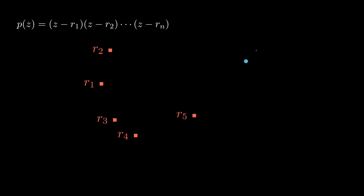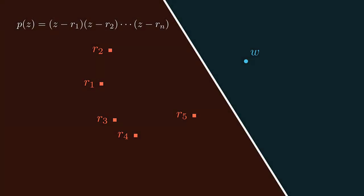Now pick some point w, and w is outside of the roots of p. And that's witnessed by the fact that there's a line that separates the roots of p, those red squares, from the point w, the blue dot. Now our goal is to show that whenever w is outside of the roots of p, I need to show that the derivative of p at the point w is non-zero.